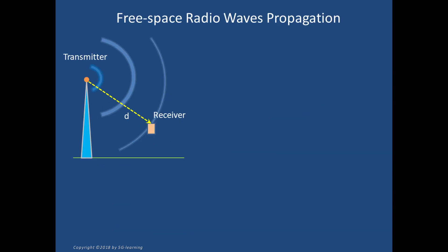Free space propagation: As a starting point, let's consider radio waves propagation when there are no obstacles interposed between the transmitter and the receiver and no reflections or diffraction effects take place.